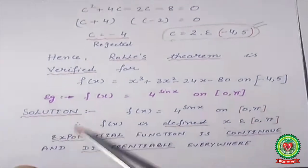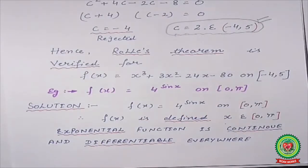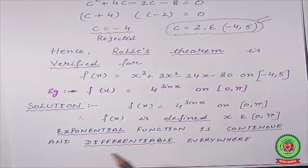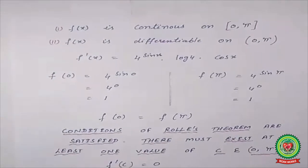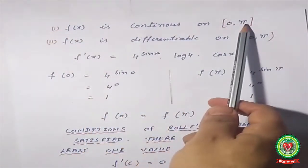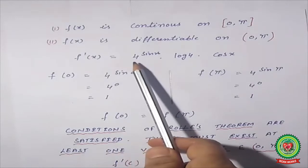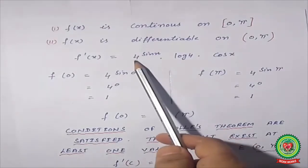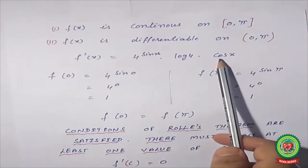Now I am taking one more example: f(x) = 4^(sin x) on [0, π]. Write down the statement, then note that x belongs to [0, π] for the closed interval. This is an exponential function; the exponential function is continuous and differentiable everywhere. So write: f(x) is continuous on the closed interval and f(x) is differentiable on the open interval (0, π). Now find the differentiation: f′(x) = 4^(sin x) · log 4 · cos x.